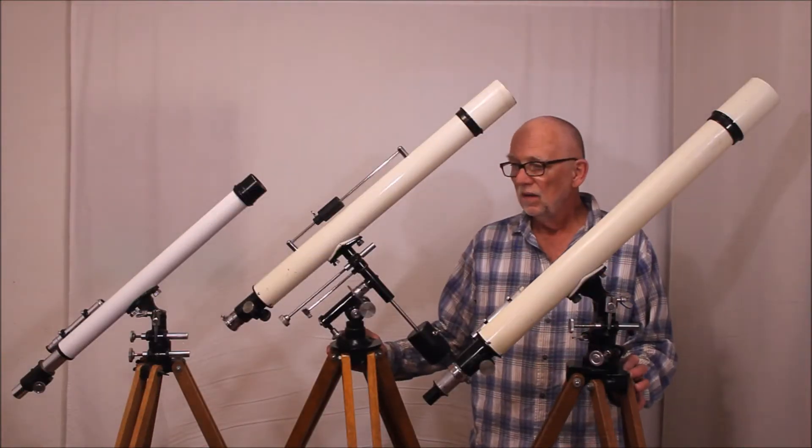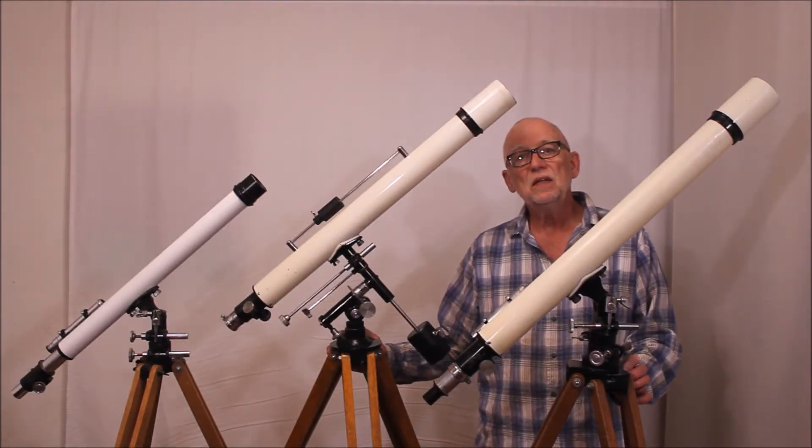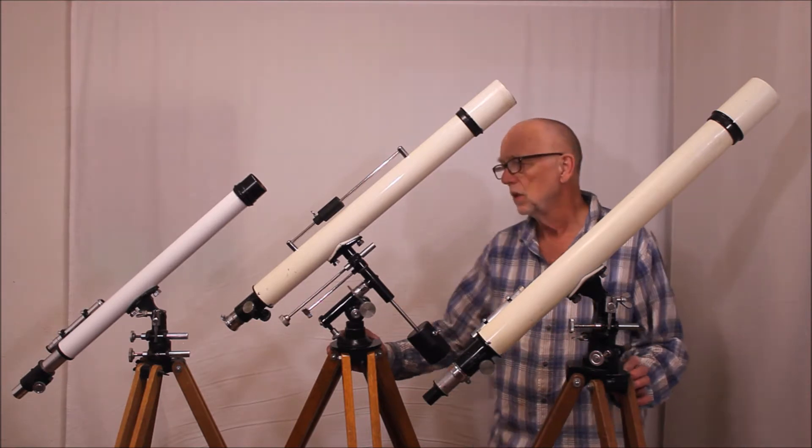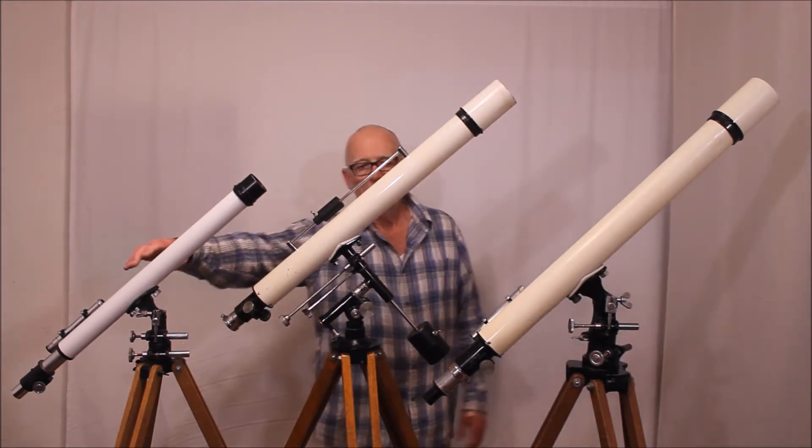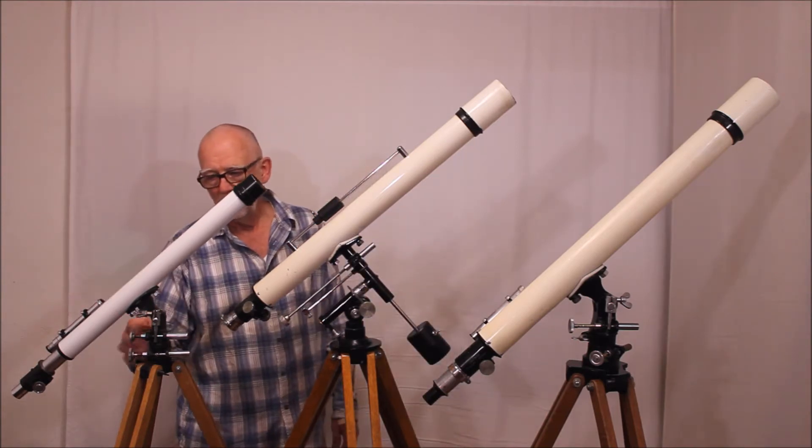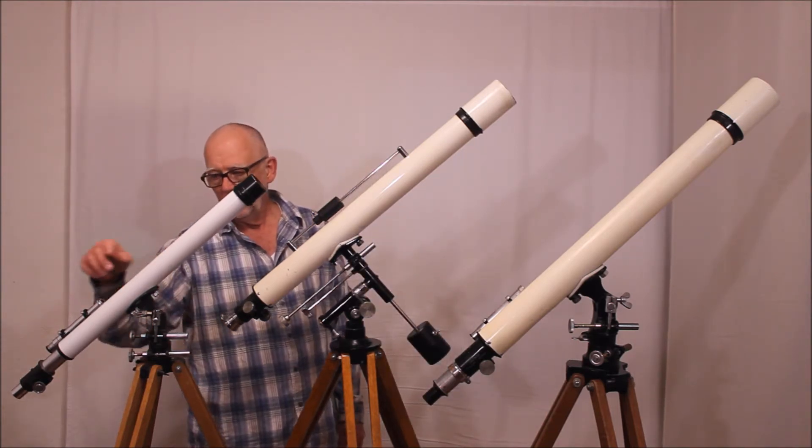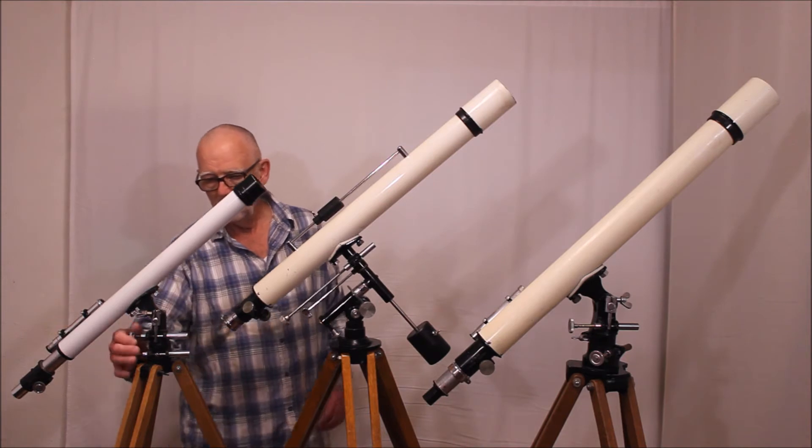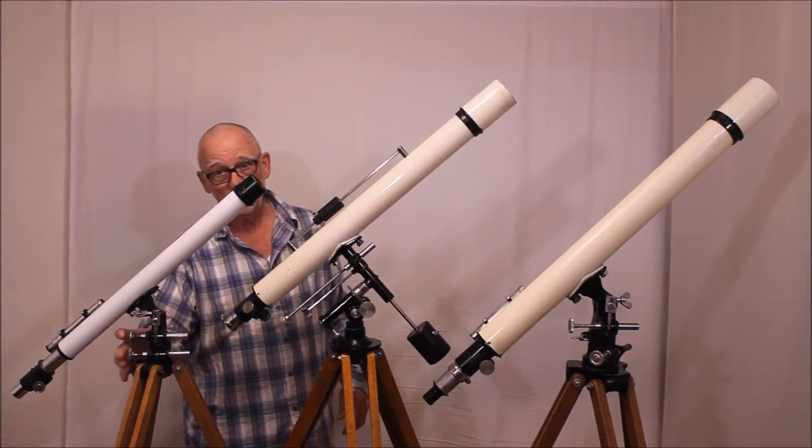Alright, here we have three early 1950s Unitron small telescopes. This one is the 127 which is a 40 millimeter scope Altaz mount, a very simple Altaz mount, matter of fact very primitive.